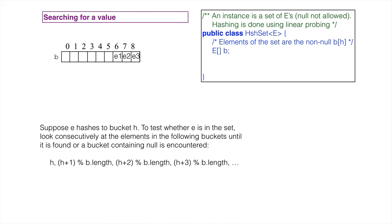Suppose E1, E2, and E3 all hashed to 6 and were added as shown. A test of whether E3 is in the set is successful. A test of whether E4 is in the set is not successful.